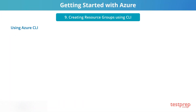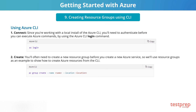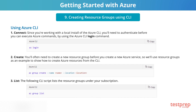Now let's see how to create a resource group using Azure CLI. First, connect to your Azure account — since you're working with a local install of the Azure CLI, you'll need to authenticate before you can execute Azure commands, using the Azure CLI login command. Second, create a resource group — you'll often need to create a new resource group before you create a new Azure service. Execute the command az group create followed by the name and region. Third, list the resource groups — the following CLI script lists the resource groups under your subscription.